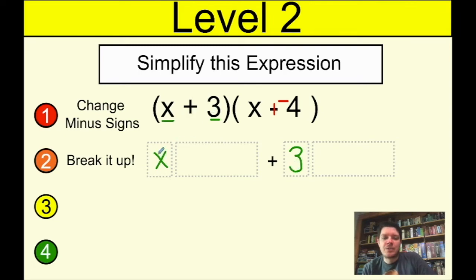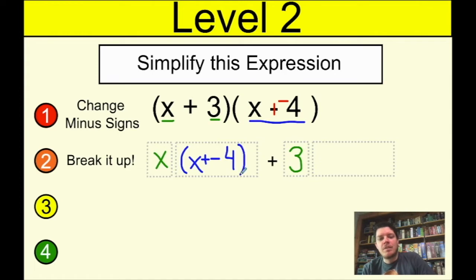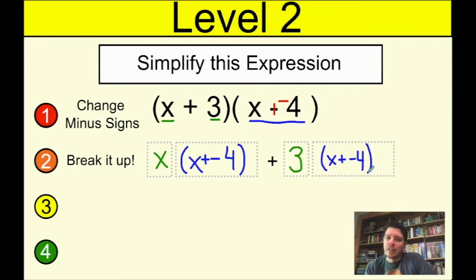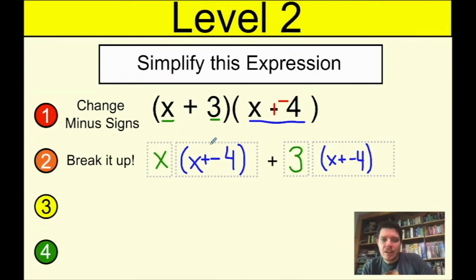So we have x in the first spot and plus three over here, then we take the whole second set of parentheses and write it next to both of them. The big idea is we're setting up two different distributions — breaking up the first parentheses and writing the second parentheses twice. Some teachers use FOIL, but I always found I made more mistakes that way, so we're doing it this way.